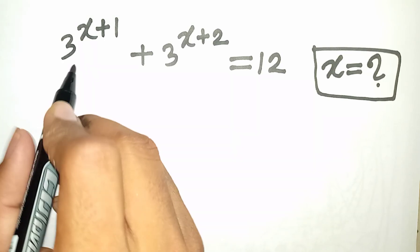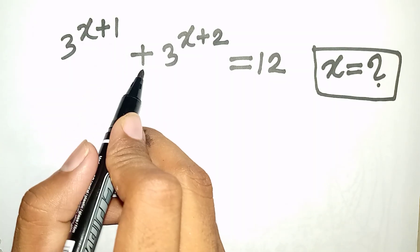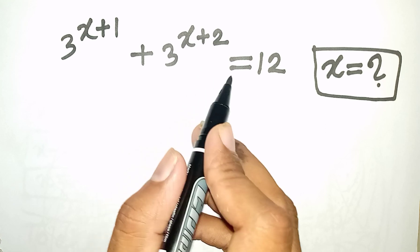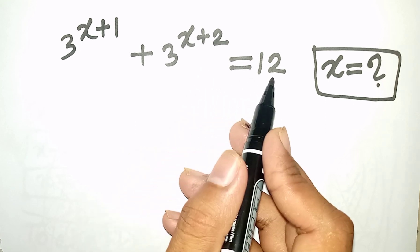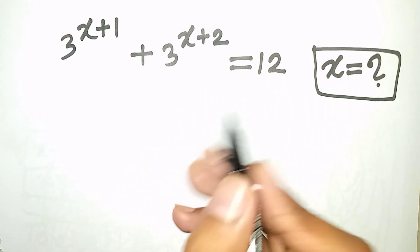How to solve 3 power x plus 1 plus 3 power x plus 2 is equal to 12. Find the value of x.